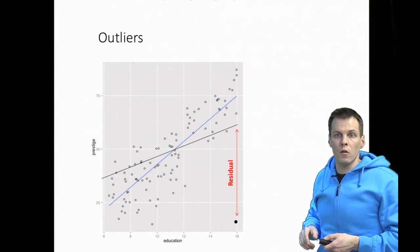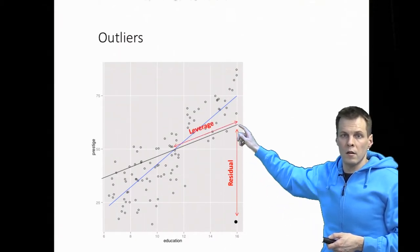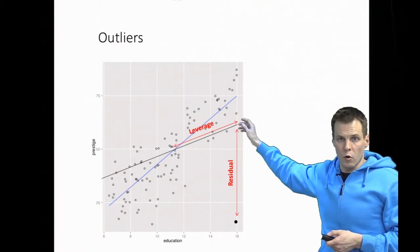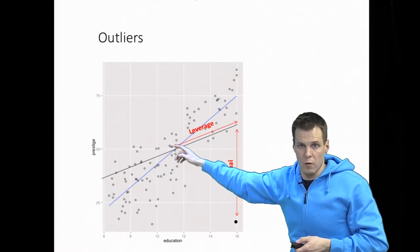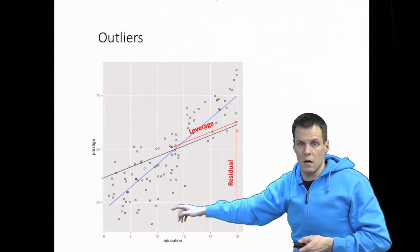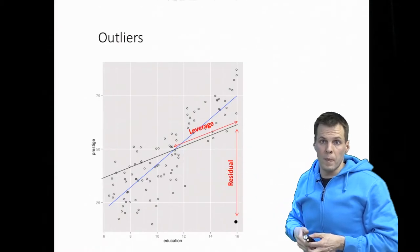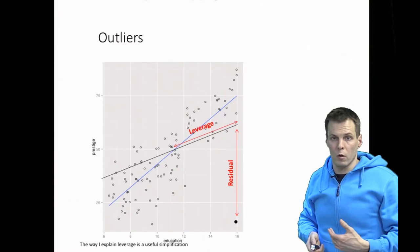Another concept is leverage. If we are pulling the regression line where there are few observations, we have a lot more leverage and the regression line moves more than if we pull it from the middle where there are lots of observations. Pulling the regression line from where there are many observations has zero leverage and the outlier wouldn't really matter. We check leverage and residual when we do outlier diagnostics.